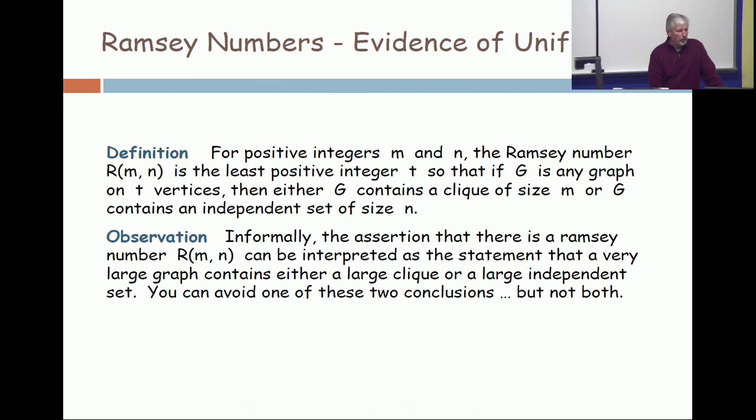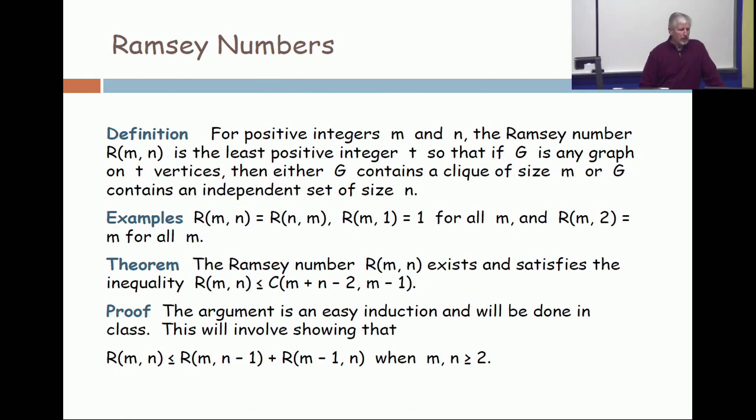All right, we're going to prove that this number exists. So on this slide I've repeated the definition, but we want to explain why these numbers exist. So let's start with the first example. R(m,n) is R(n,m). It doesn't matter in which order you put the two parameters.